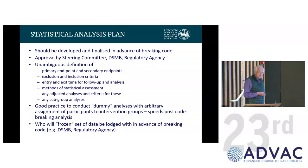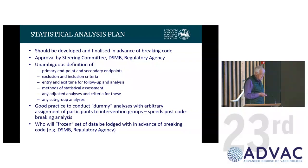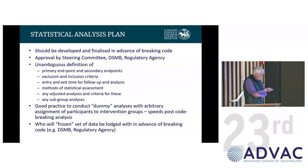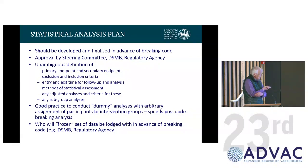The statistical analysis plan should be developed or finalised in advance of breaking the code. What used to happen is people broke the code, looked at the data, and then decided how to analyse it. There was an appreciation that this might be biased — you may pick results that look better than others. So now there's a requirement in most major trials to have a statistical analysis plan where you write details of how you're going to analyse the data before breaking the code. This is normally guided by what's in the protocol.